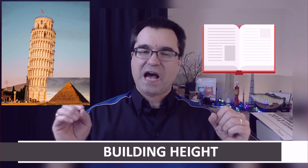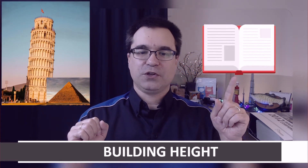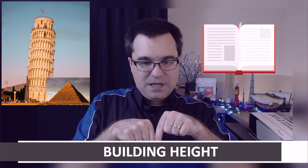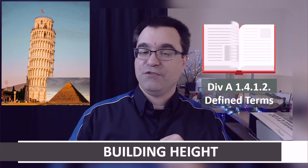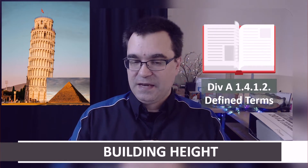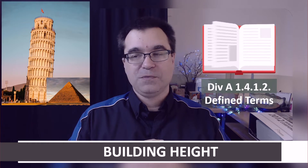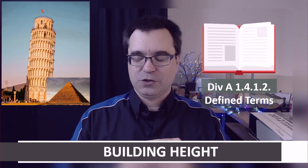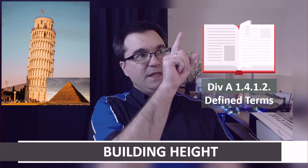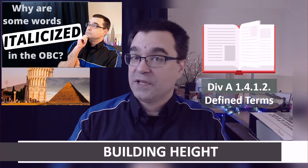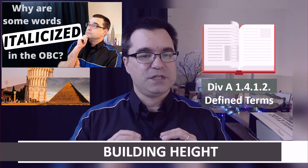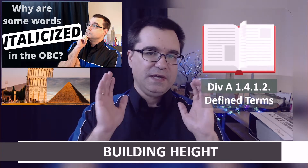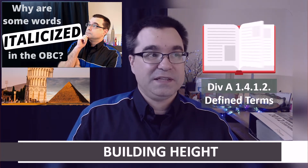First we have to go to the right spot in the Ontario Building Code to find the definition for building height. We want to go to Volume 1, Division A, Article 1.4.1.2, where we can find the definitions — or as the building code calls them, defined terms. I'm also going to link a video I prepared about definitions in the Ontario Building Code and how to find and identify them.